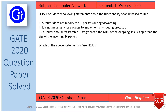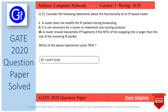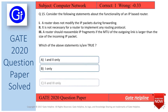Question number 15 is from computer networks and the question is: Consider the following statements about the functionality of an IP-based router. First, a router does not modify the IP packets during forwarding. Second, it is not necessary for a router to implement any routing protocol. Third, a router should reassemble IP fragments if the MTU of the outgoing link is larger than the size of the incoming IP packet. Which of the above statements is/are true?